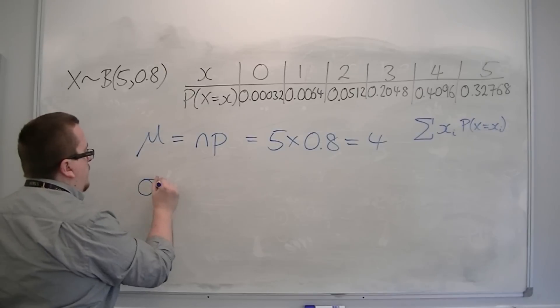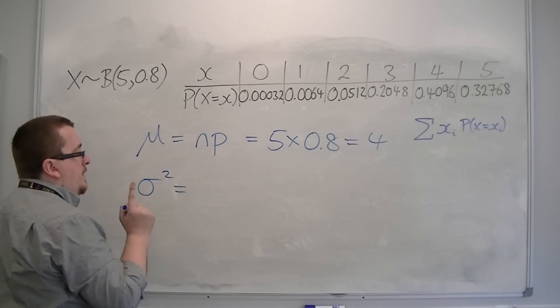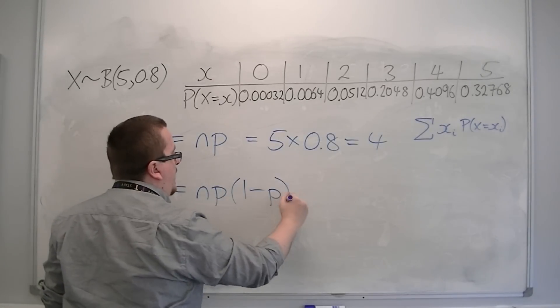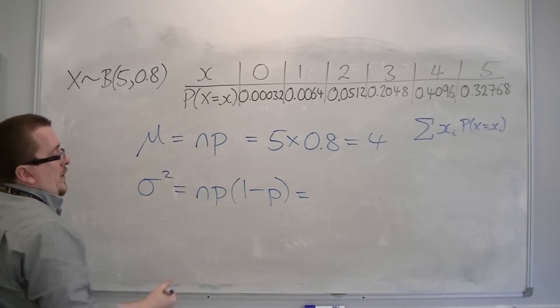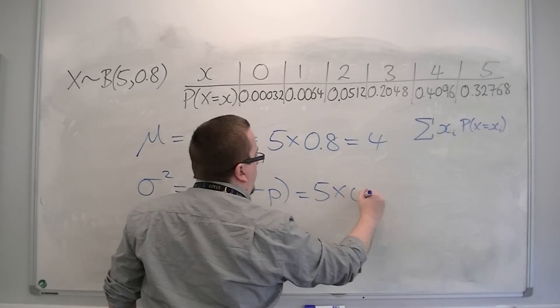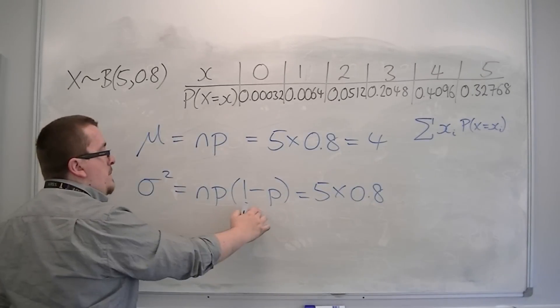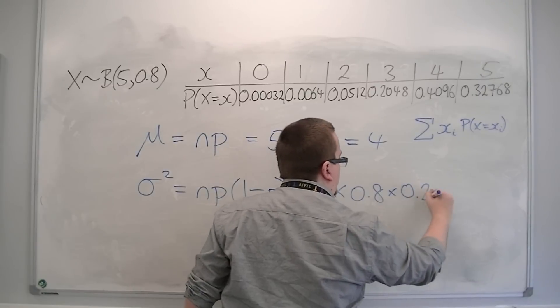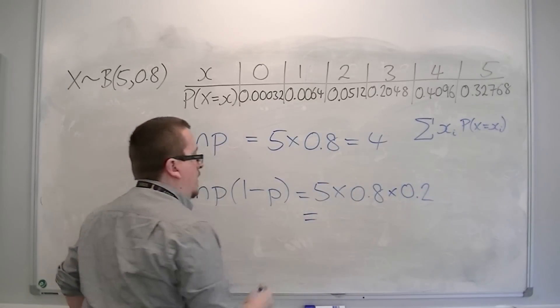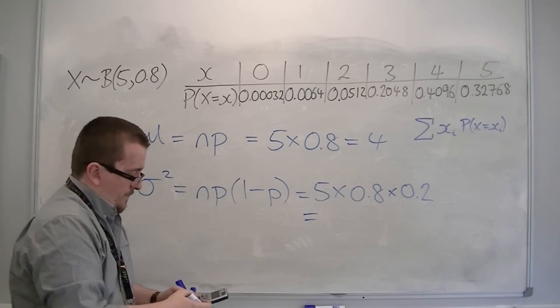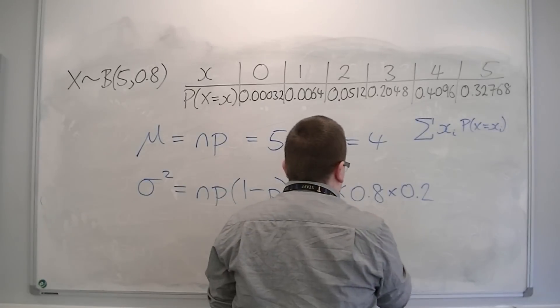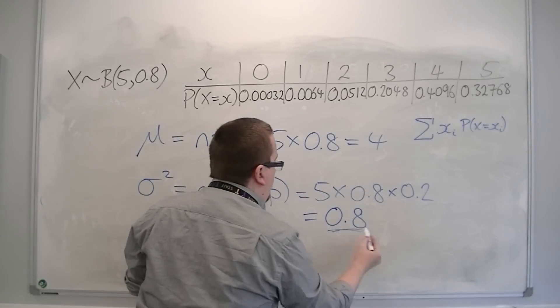If you want the variance, then the formula also in the formula booklet is Np times 1 minus p. That's 5 times 0.8 times by 0.2, one take away 0.8. So 5 times 0.8 times 0.2 is 0.8. That's the variance.